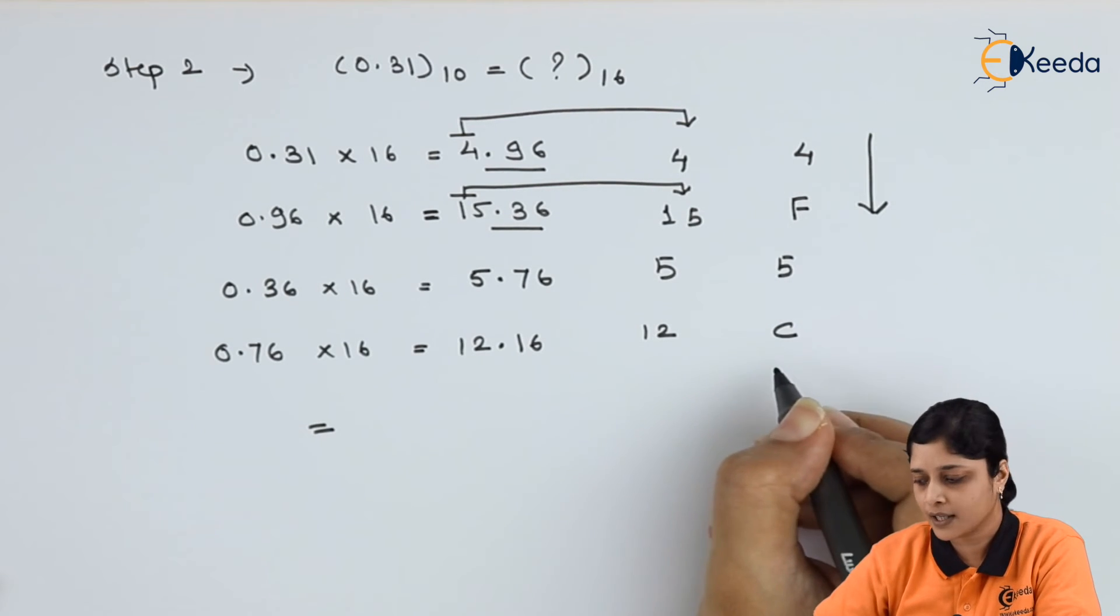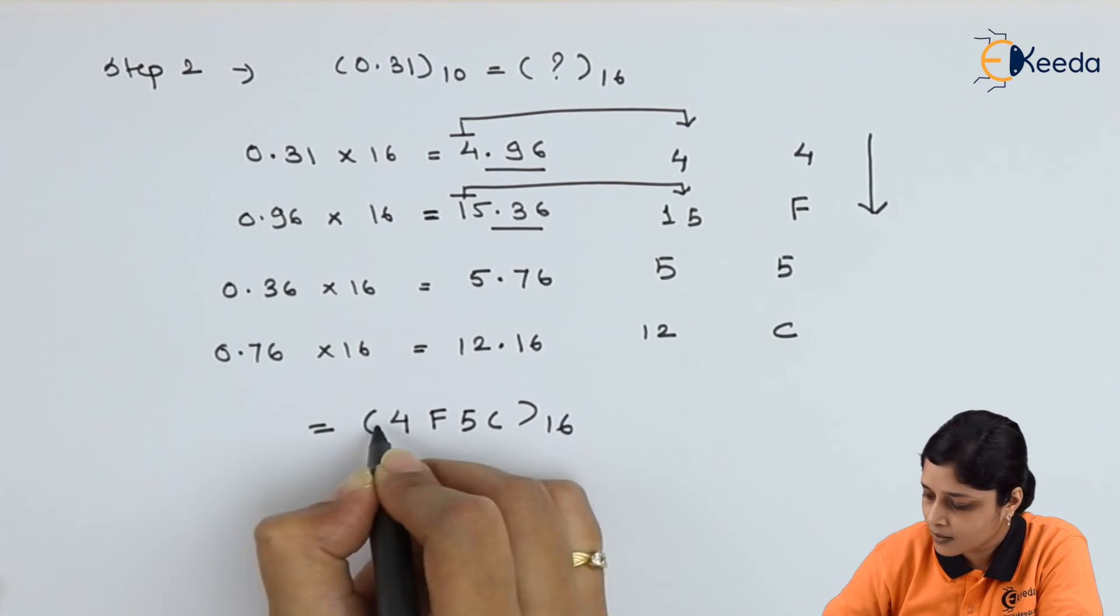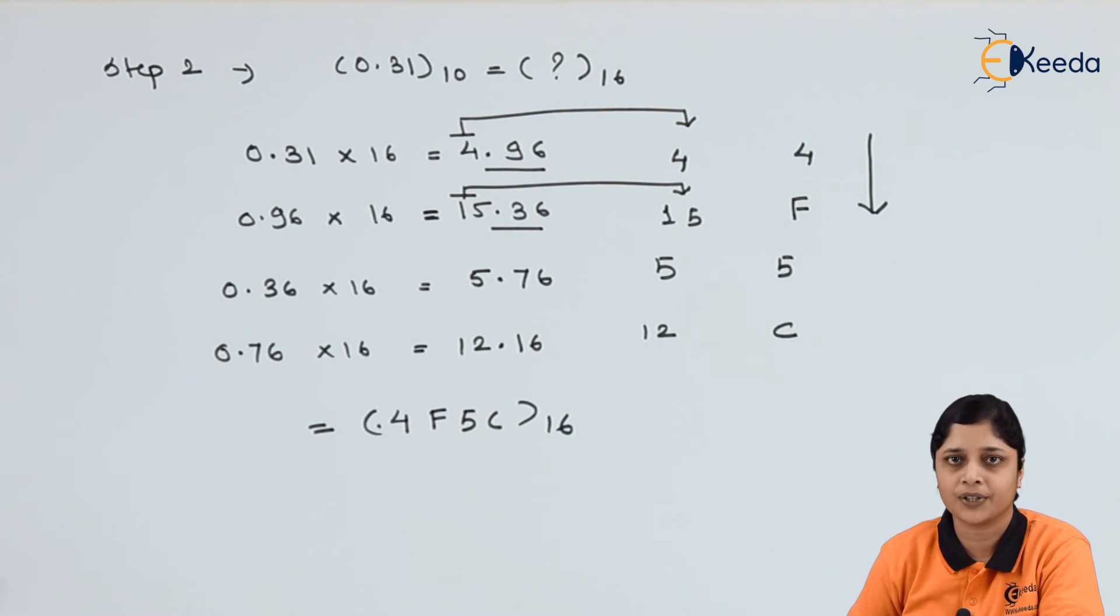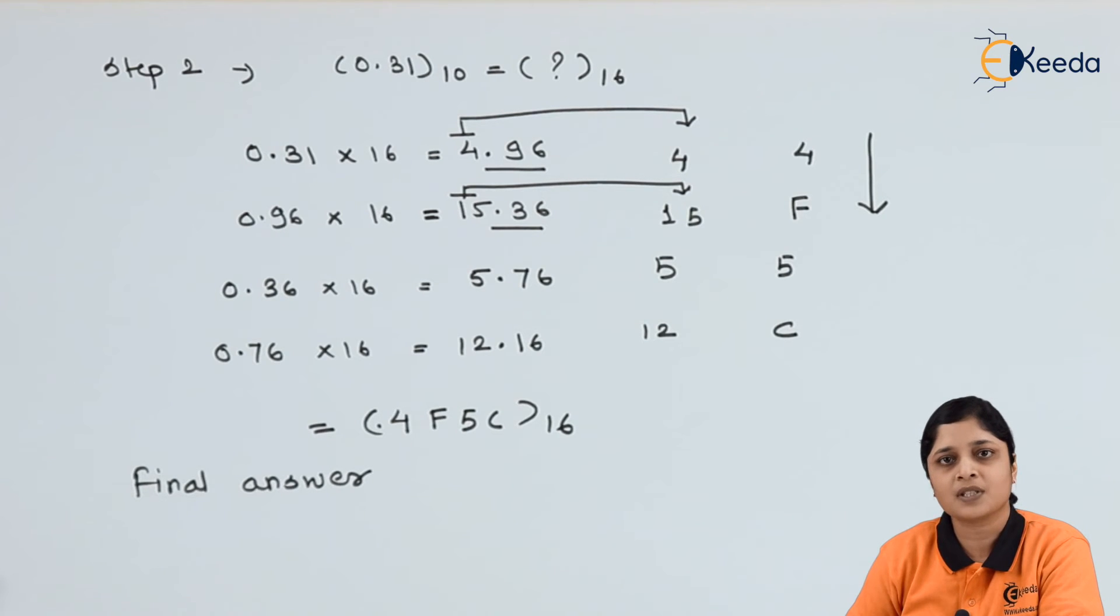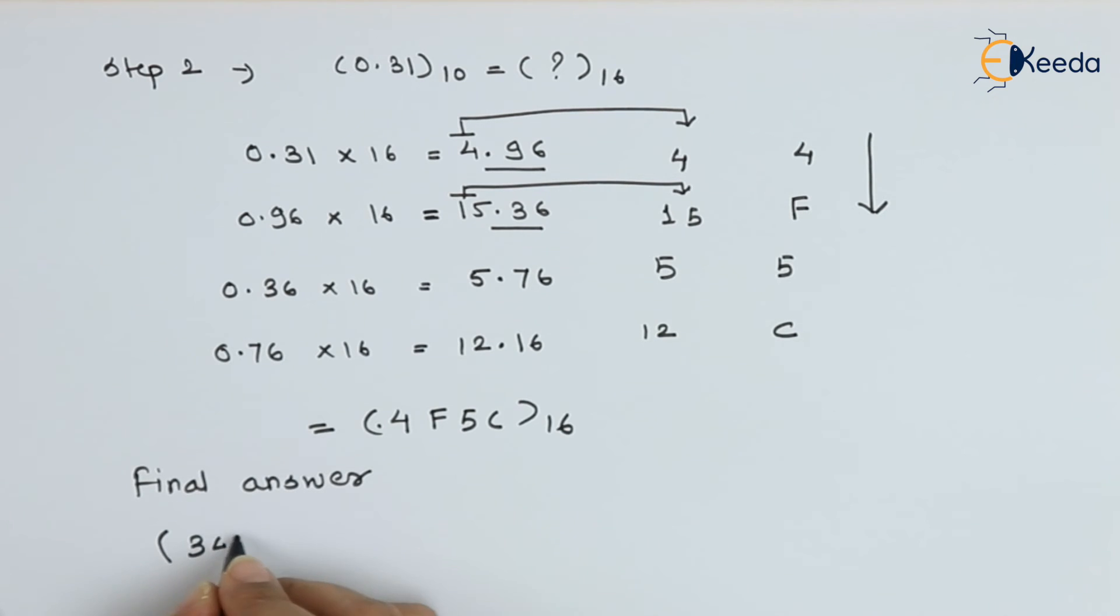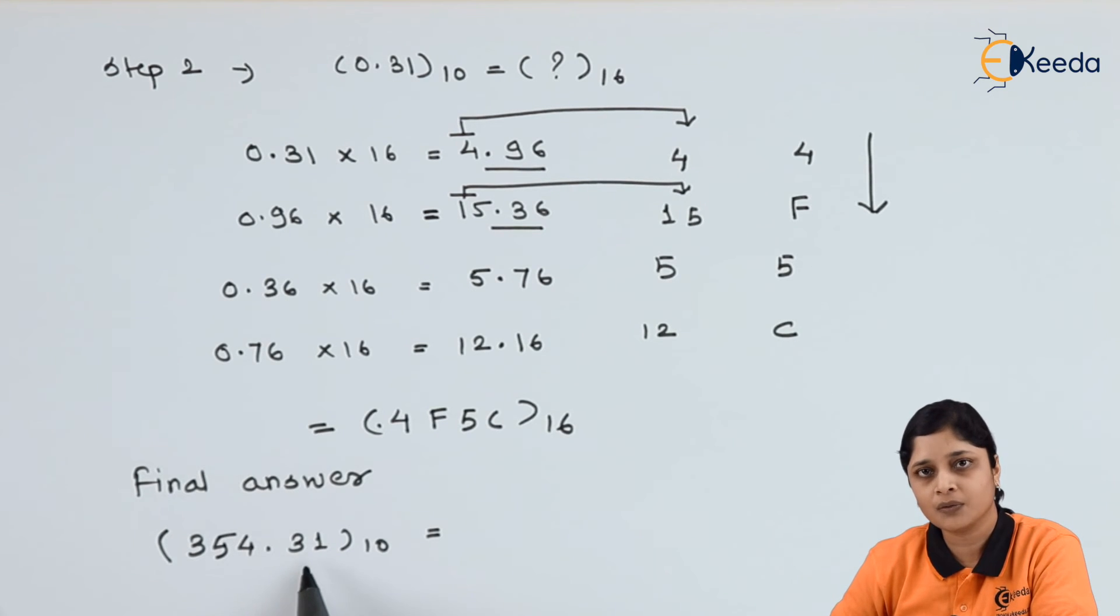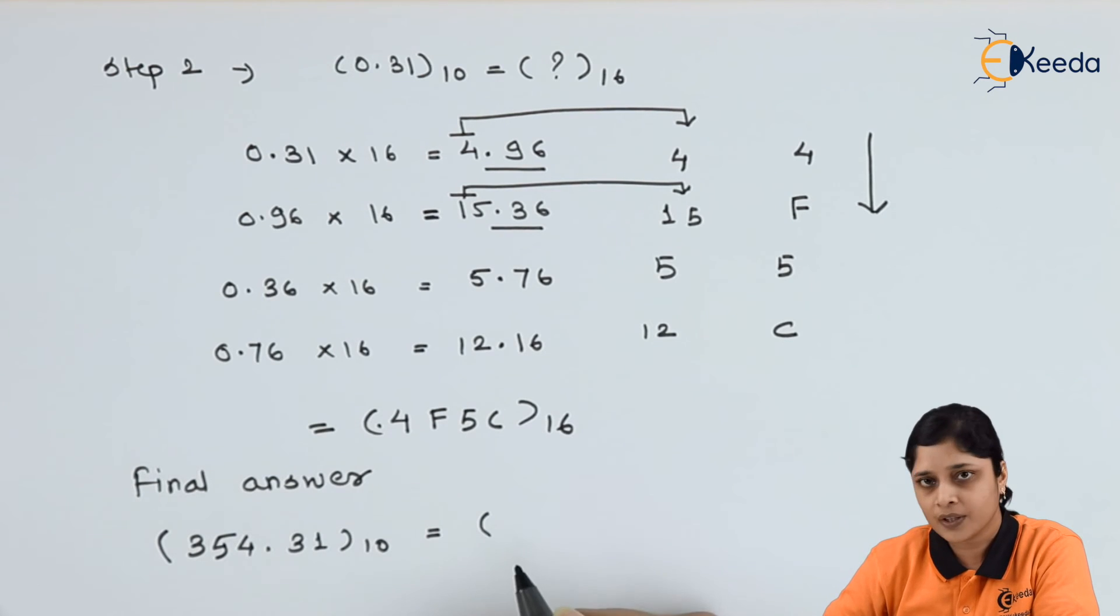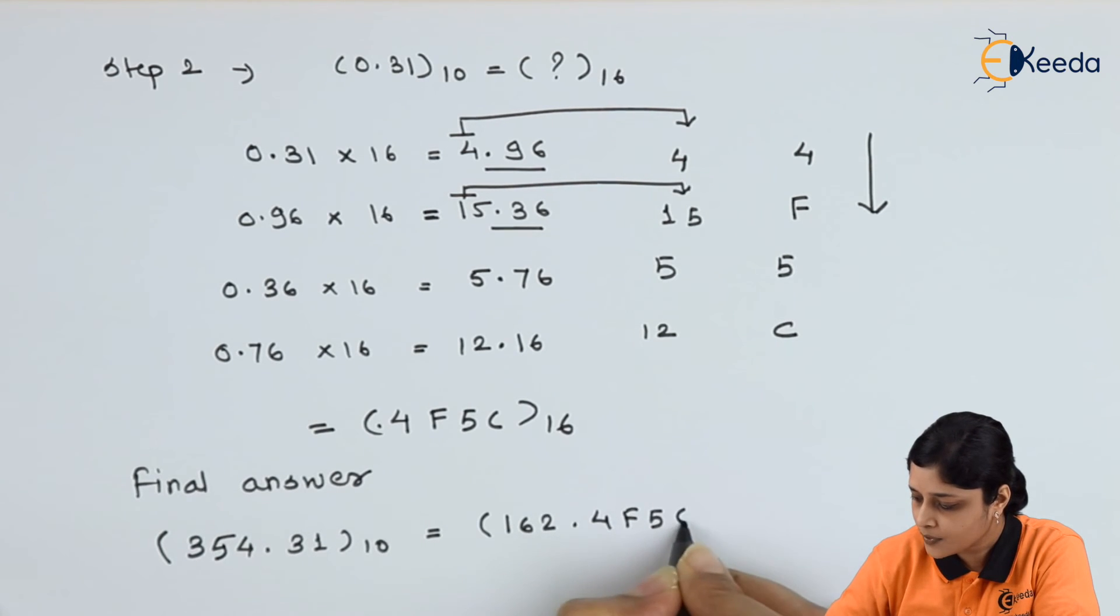Draw one arrow and write down from top side to the down side. Final answer will be the combination of step one answer and step two answer. So final answer is: your question was 354.31 to the base 10.